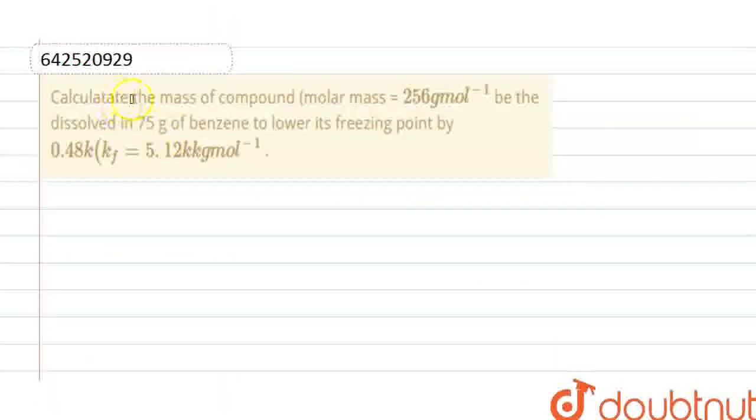Hello everyone, here the question is: calculate the mass of compound dissolved in 75 grams of benzene to lower its freezing point by 0.48 Kelvin.